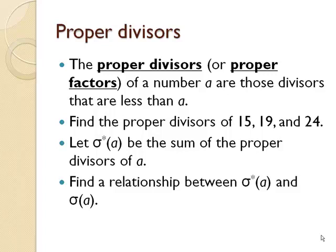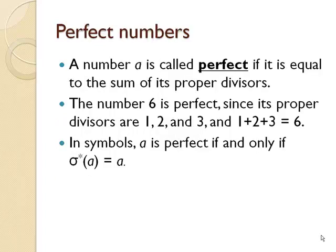Perfect numbers are those numbers where the number itself is equal to the sum of the proper divisors. 6 is a perfect number since its proper divisors are 1, 2, and 3. And if we add those together we get the number 6. In symbols we would say A is perfect if and only if sigma star of A is equal to A.